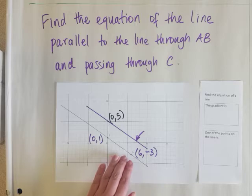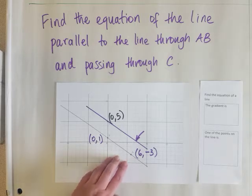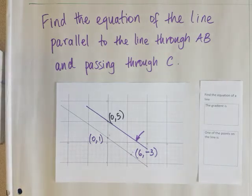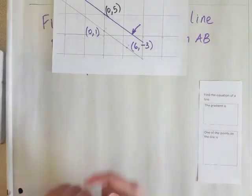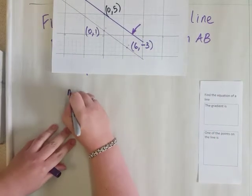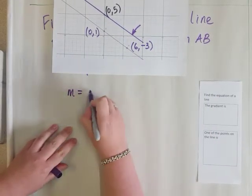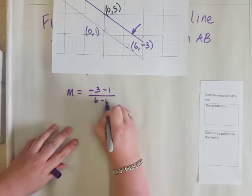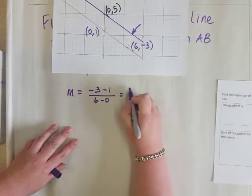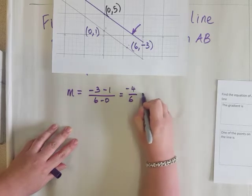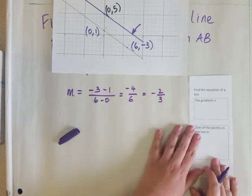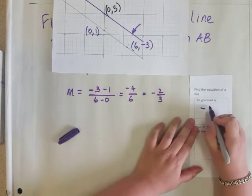So I want to find the gradient of this point to this point. To work that out, you can check out my video on finding the gradient. I'll put the link in the description box below. But I've worked it out before, so here it is. Gradient is (-3 - 1) / (6 - 0), which is -4/6. So that's -2/3. I'll write it in my box. The gradient is -2/3.